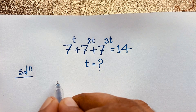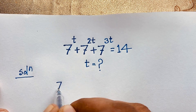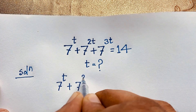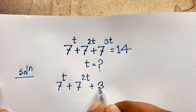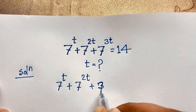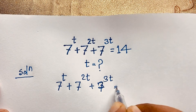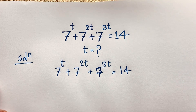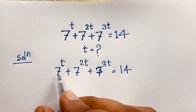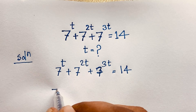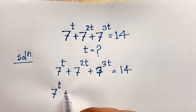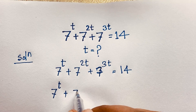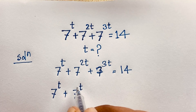Our question is 7 to the power t plus 7 to the power 2t plus 7 to the power 3t is equal to 14. Now, here 7 to the power 2t can be written as 7 to the power t, bracket, to the power 2.